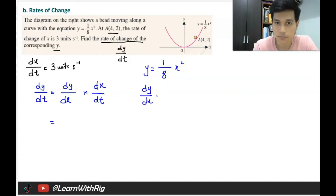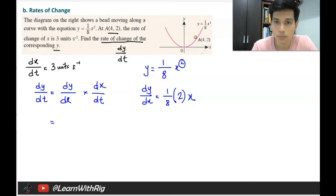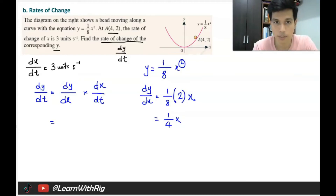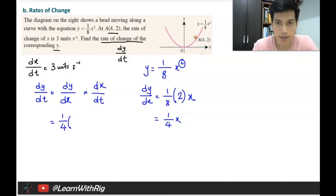You know y = (1/8)x², so find dy/dx by basic differentiation: bring the 2 forward, giving dy/dx = (1/4)x. At point A, the x-value is 4. Substituting: dy/dx = (1/4)(4) = 1. Then dy/dt = 1 times 3 = 3 units per second.